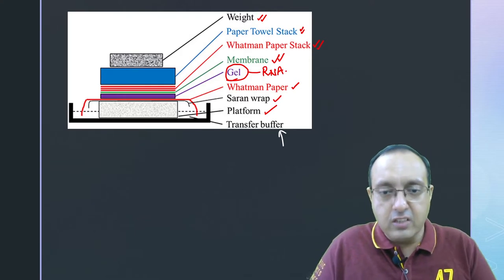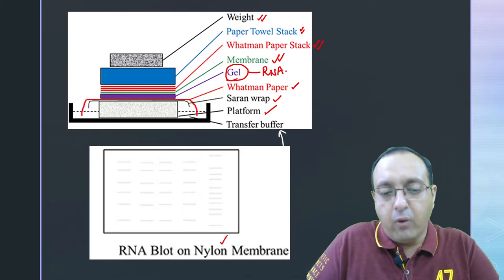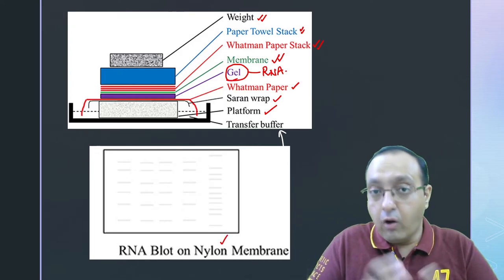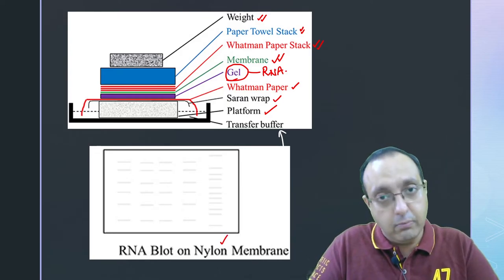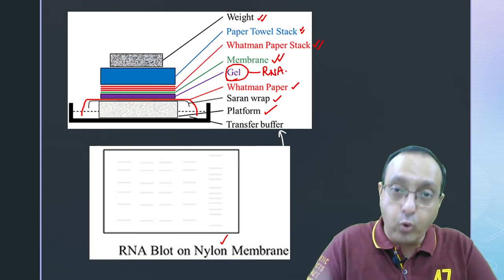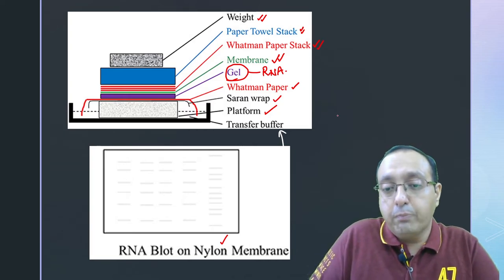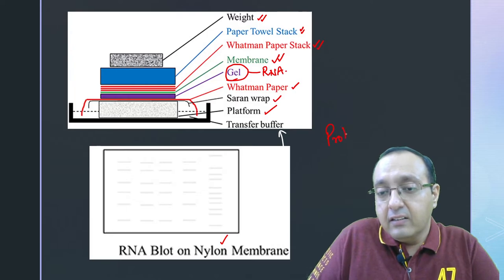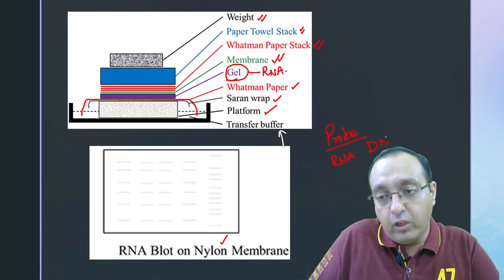This is the traditional setup and this is how it looks like. We have the RNA blot on the nylon membrane. All RNA is transferred from the gel to the membrane and now we are ready to probe it using probes. The probe in this case is a complementary RNA or in some cases, even DNA molecule.